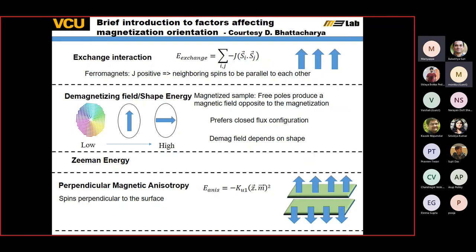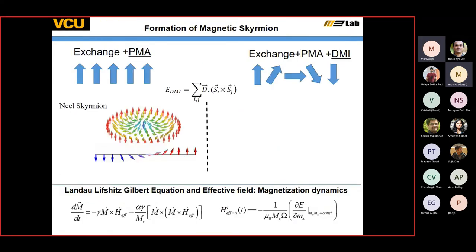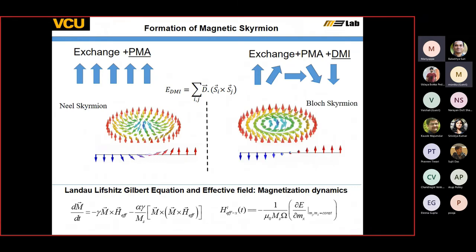You can also have Zeeman energy where you interact with a global field, and then you have perpendicular anisotropy - for example, when you deposit on certain interfaces the magnetization points up or down rather than in-plane. There's also the Dzyaloshinskii-Moriya interaction, which happens at interfaces: you have one spin, another spin, coupled through a heavy metal atom. The spins don't want to be parallel or antiparallel; they want to be perpendicular. Whether the spins rotate one way or another is determined by the chirality of the material, which comes from the sign of the DMI.